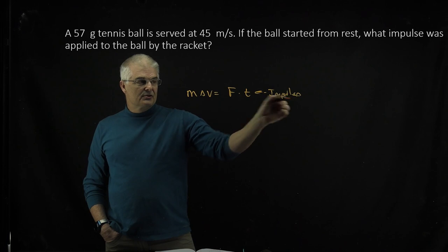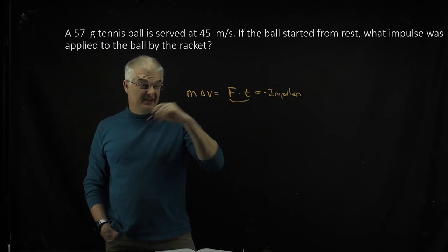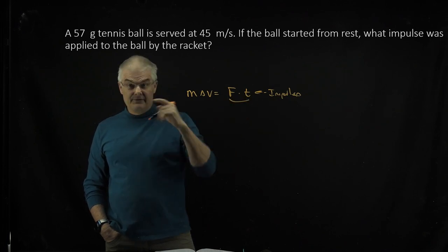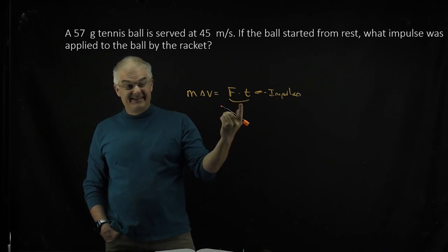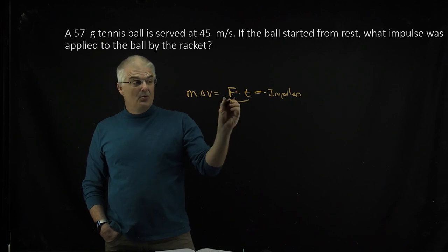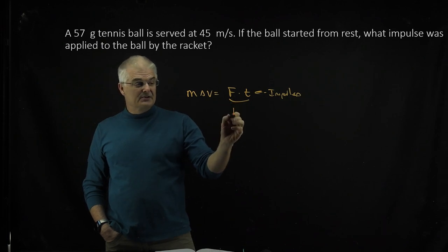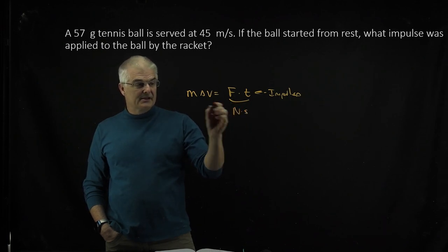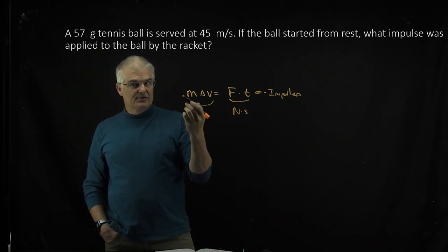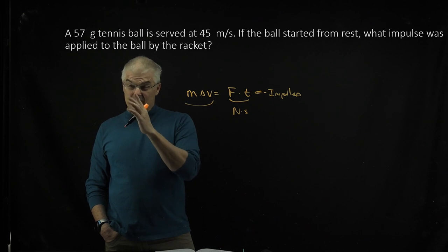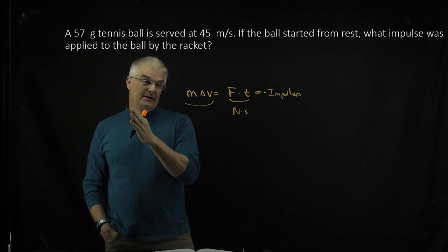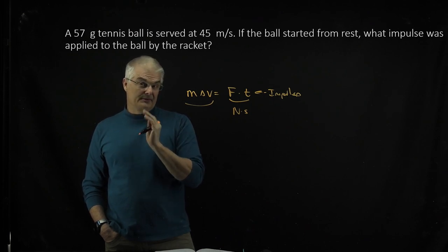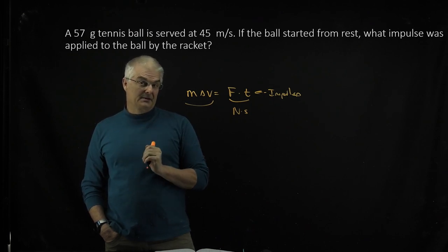So if you want to solve, the impulse is the combination of these two. If you know a mass and a velocity, then you can find the impulse. Watch out — the units on impulse will be a newton second. And note that the mass is not in kilograms; you have to convert the mass to kilograms.